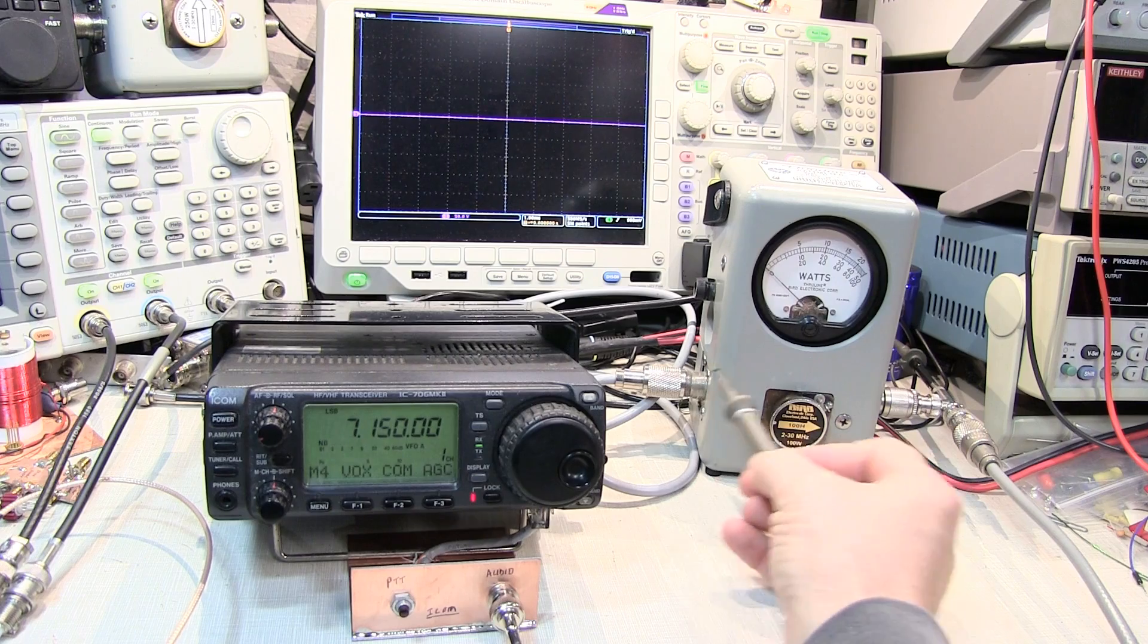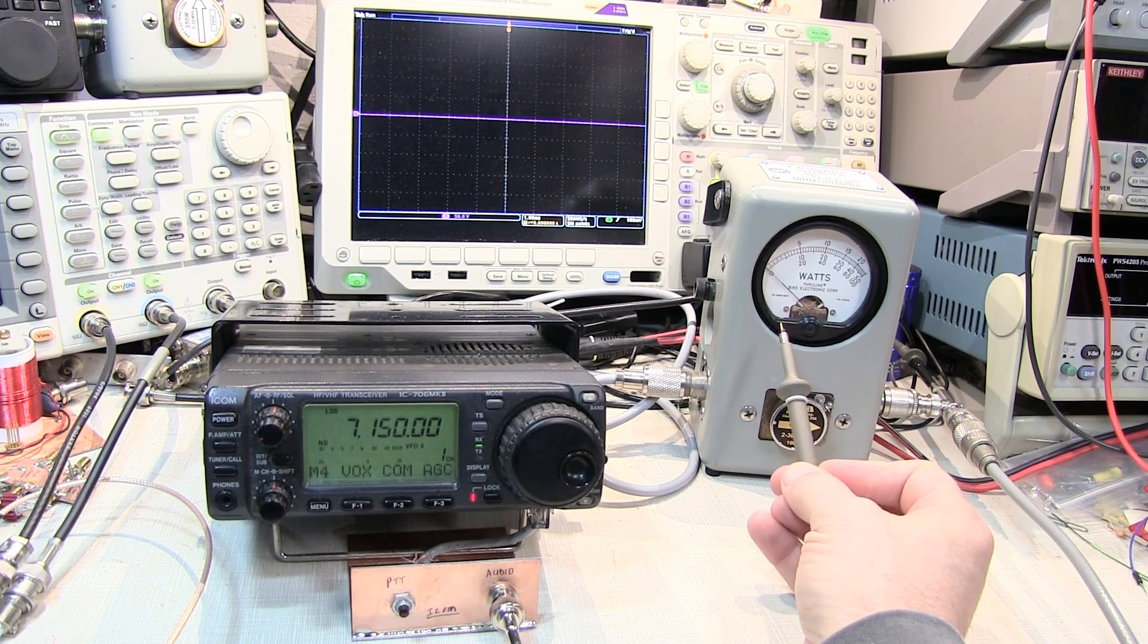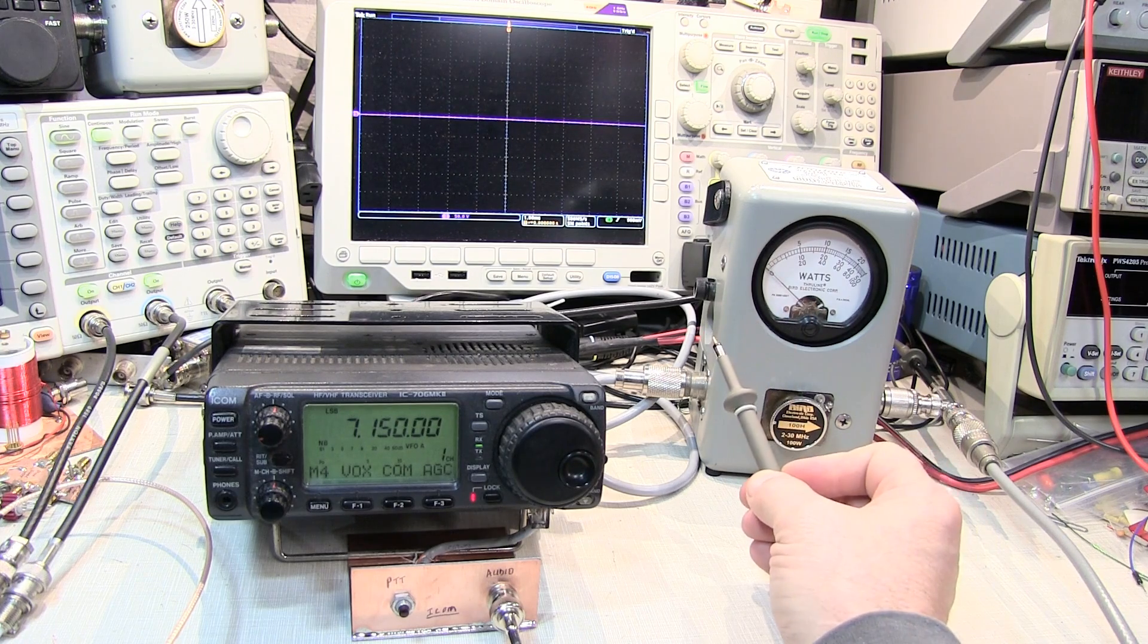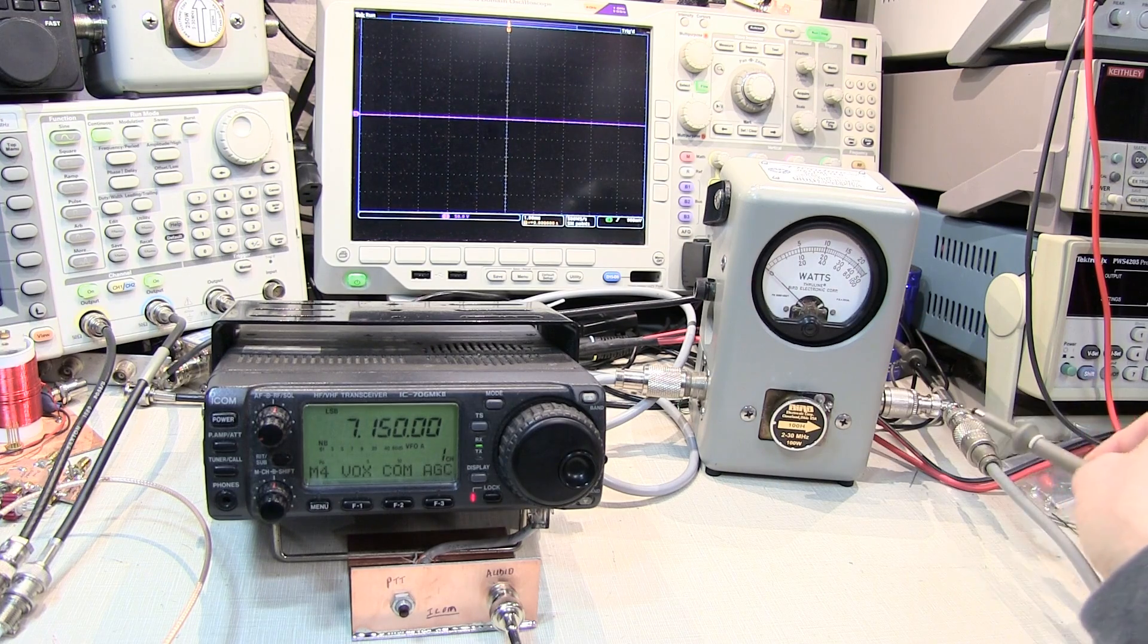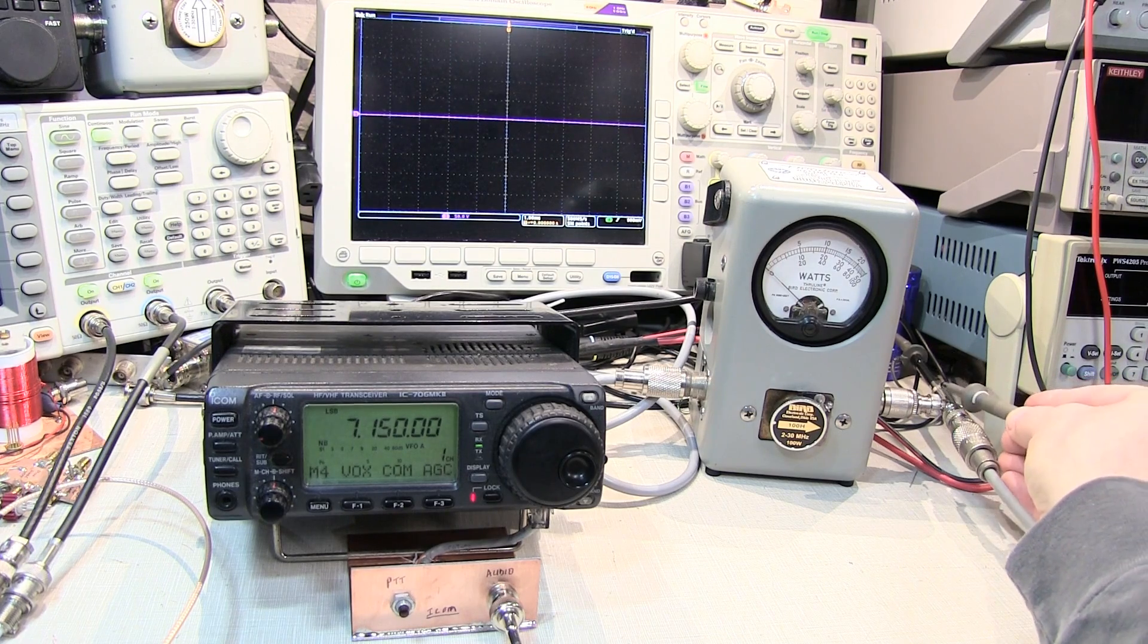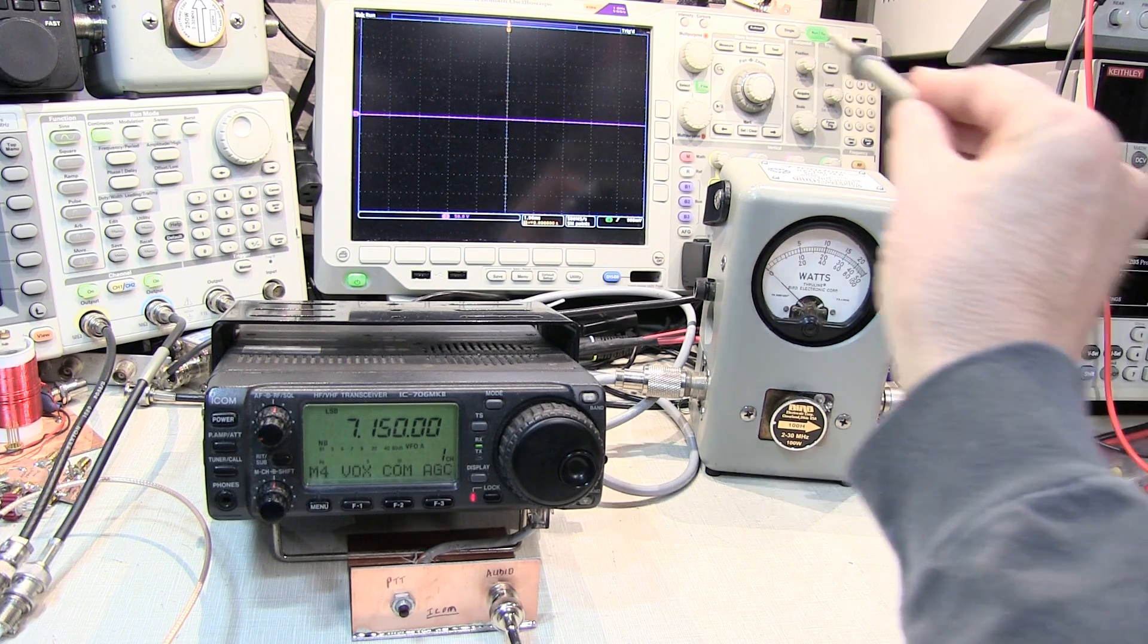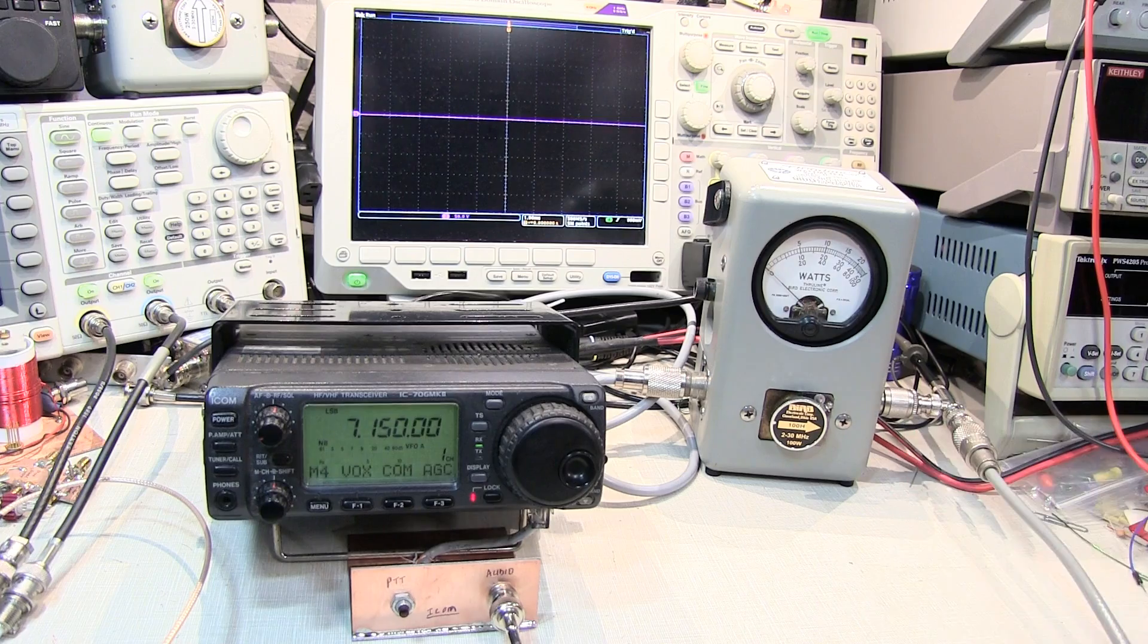I've got the radio output going through the BIRD wattmeter, which is going to read average power. So it's not going to follow the peaks of the envelope, but it's going to tend to average all of that out, and we'll talk a bit more about that shortly. And then the output of that is going out this coax to a dummy load that's mounted underneath my bench. And then I've got a probe adapter that allows me to plug in a scope probe, and that's the voltage that's going to the scope, so we can actually measure voltages on that RF signal.